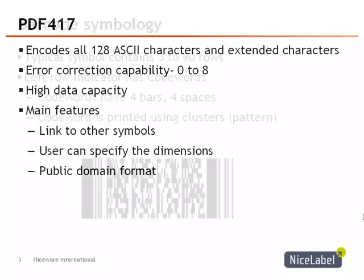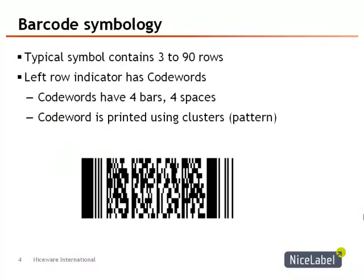The PDF-417 barcode is limited to 30 columns in 90 rows. Looking at the barcode, we have a quiet zone on both the left and the right-hand side of the code. The start character is the first one on the left after the quiet zone, and we have a stop character which is on the right-hand side before the quiet zone.